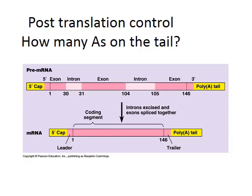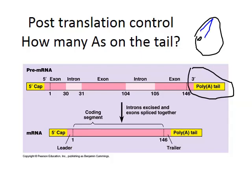Another way mRNA can be regulated is by how many A's are on its poly-A tail. Once the mRNA is out in the cytoplasm — the space beyond the nucleus — there are many digestive enzymes present. The more A's on that tail, the safer the mRNA will be. Those A's can eventually be broken off, the mRNA gets broken down, and it can no longer be used to make proteins.